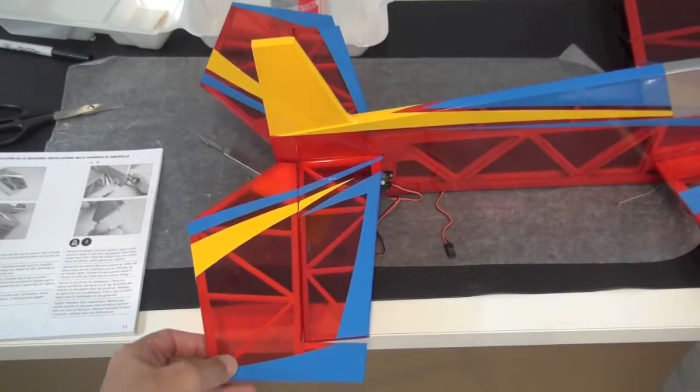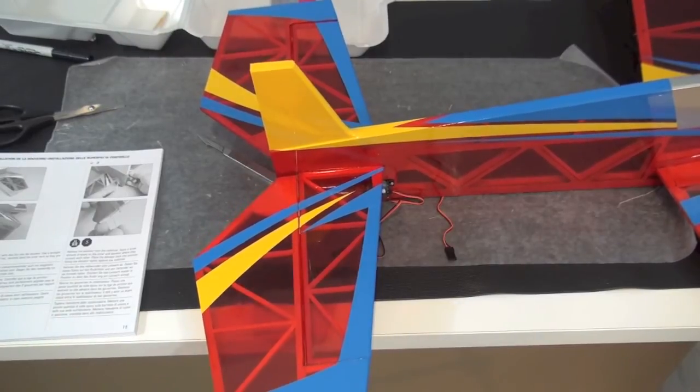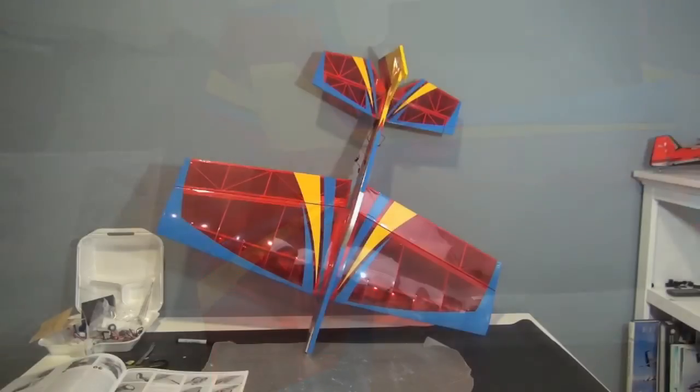All right, so a quick test fit. Actually, everything lines up pretty much perfectly. I didn't have to widen any of the slots or anything, so I'm going to go ahead and just get it all glued in. All right, guys, so after you do the elevator, you do the rudder and the ailerons with the same CA hinges. Everything went just fine, and we're onto the landing gear.